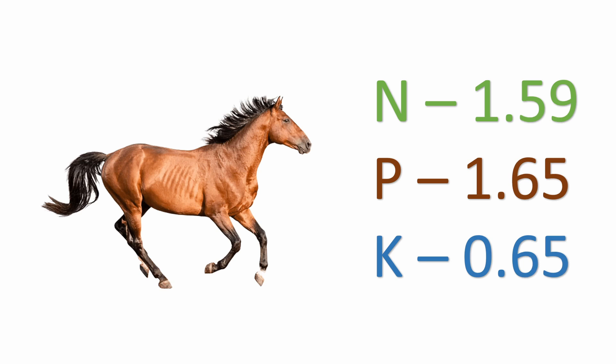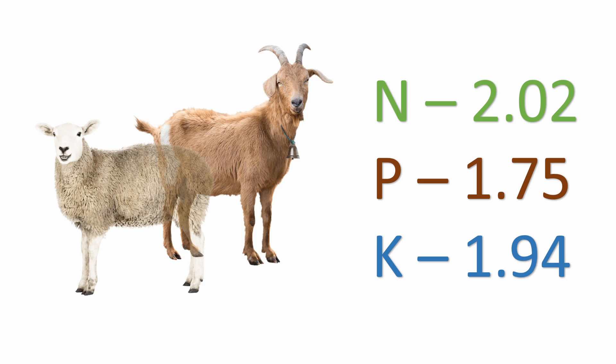For horses, you have a balance of nitrogen and phosphorus and a slightly light potassium source. For goats and sheep, you have here a well balance between these components.